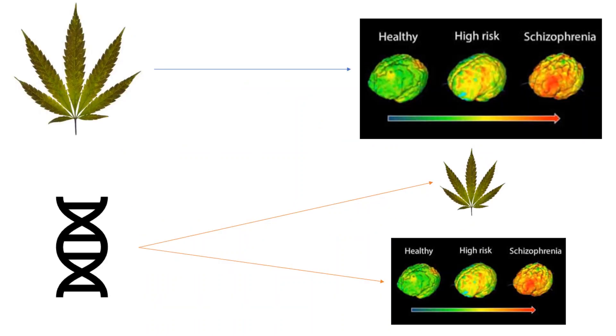In some cases, polygenic scores are also relevant to debates on social policy. Does consumption of cannabis increase the risk of schizophrenia? Or are people who are genetically predisposed to schizophrenia also genetically more likely to consume cannabis?